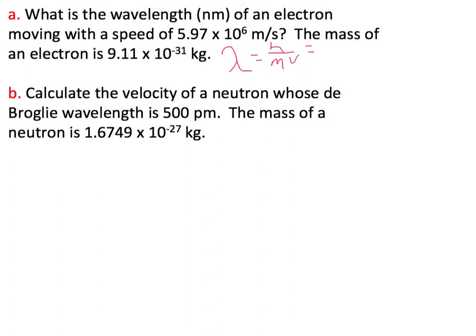And so if we plug in for that, we know what Planck's constant is, which is 6.626 times 10 to the minus 34 joules per kilogram second. And we're going to divide that then